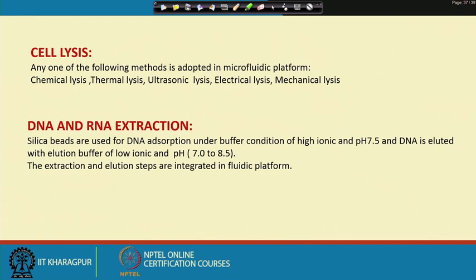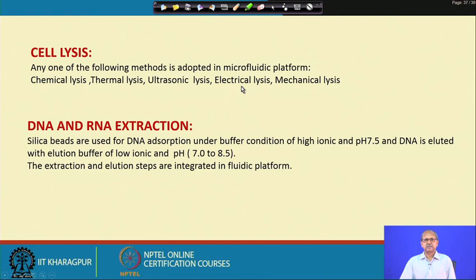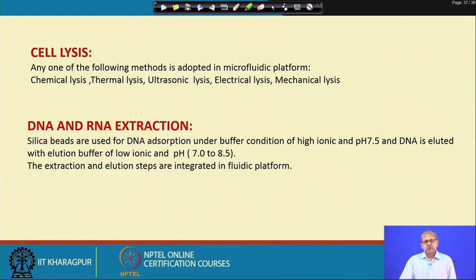The starting material is cells. Any of the following methods can be adopted for cell lysis: thermal lysis, ultrasonic lysis, electrical lysis, or mechanical lysis — all these processes are adopted in microfluidic platforms. After cell lysis, DNA and RNA should be extracted. In the extraction process, solid phase extraction is adopted, where DNA and RNA are absorbed on silica particles at pH 7.5 at high ionic strength and eluted at low ionic strength around pH 7 to 8.5. After extraction, DNA flows through the fluidic channel to the PCR platform.